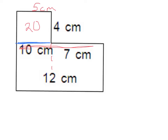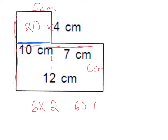This outside line here is 10 centimeters long, 4 of which are right here. 10 minus 4 is 6, so this one is 6 centimeters. My equation for the bottom rectangle is 6 times 12. 6 times 10 is 60, 6 times 2 is 12, and 60 plus 12 is 72. So the area of my bottom rectangle is 72 centimeters squared.